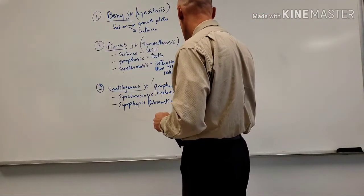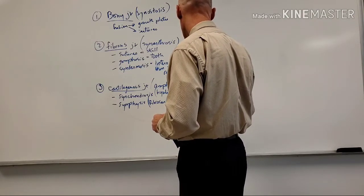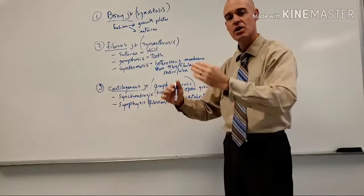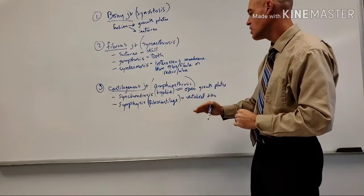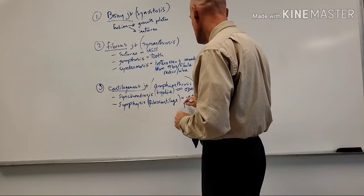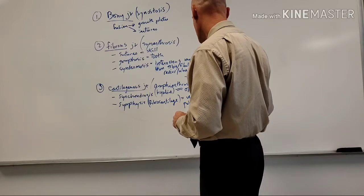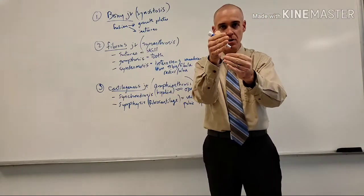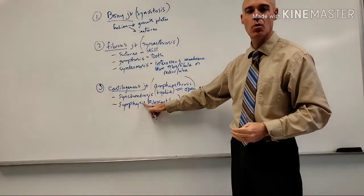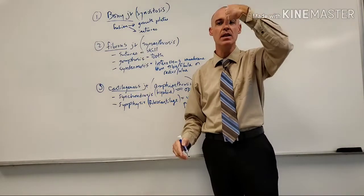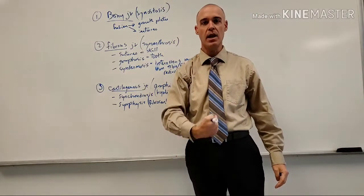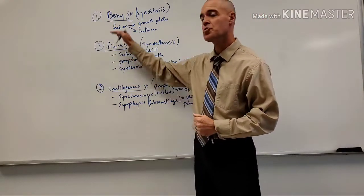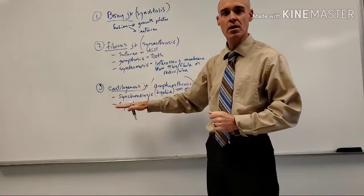The symphysis is made of fibrocartilage. Examples include the vertebral discs — between vertebral bodies there is a cartilaginous disc made of fibrocartilage, making it a type of symphysis joint — and the pubic symphysis, between the two pubic bones, where there is a piece of fibrocartilage. One easy thing to remember: symphysis joints are always midline joints. Both the vertebral discs and the pubic symphysis are midline.